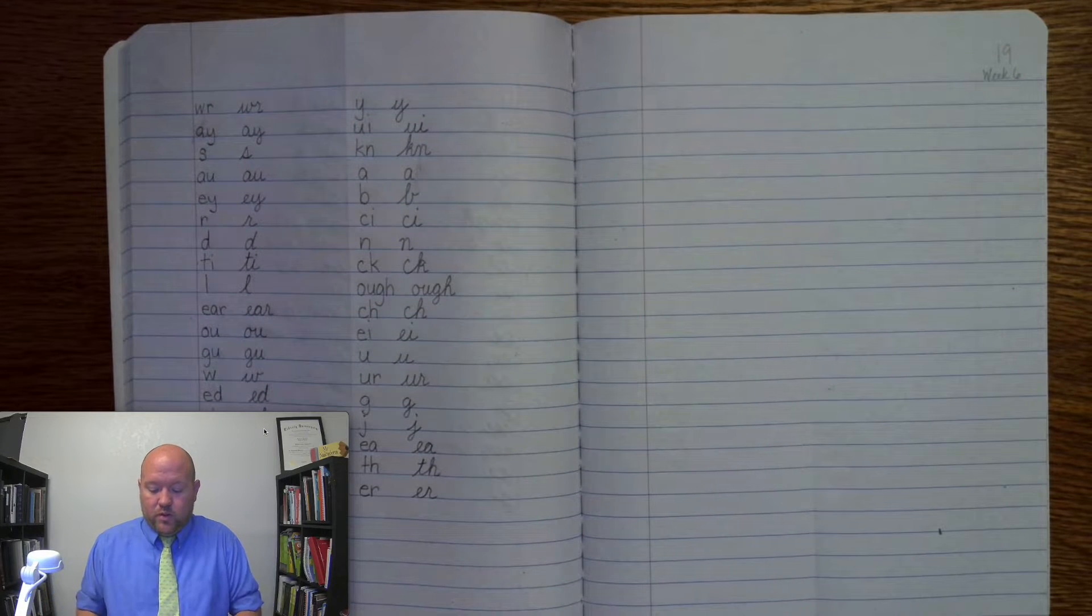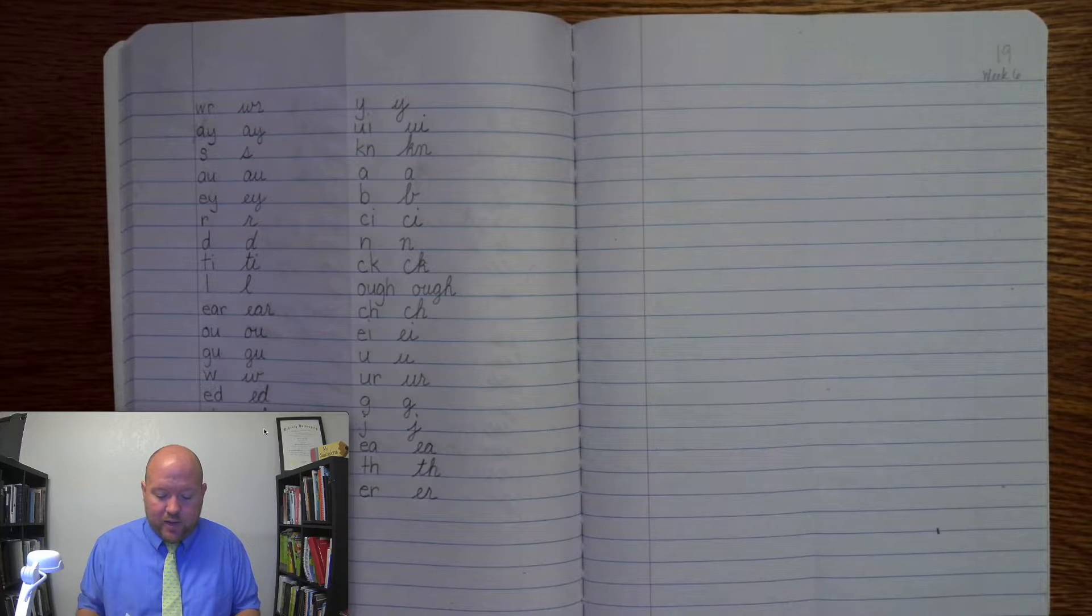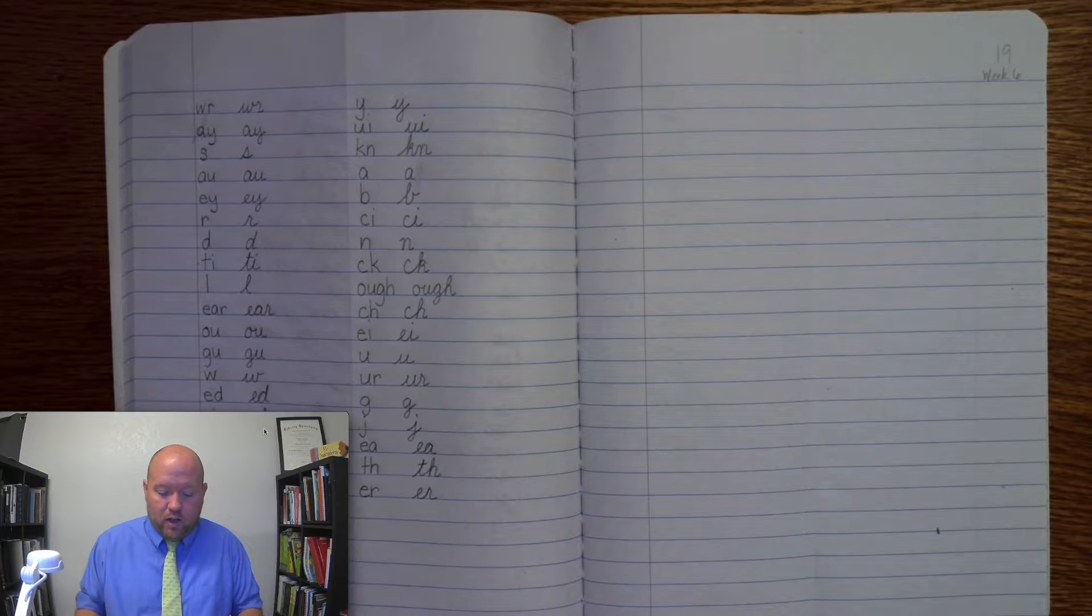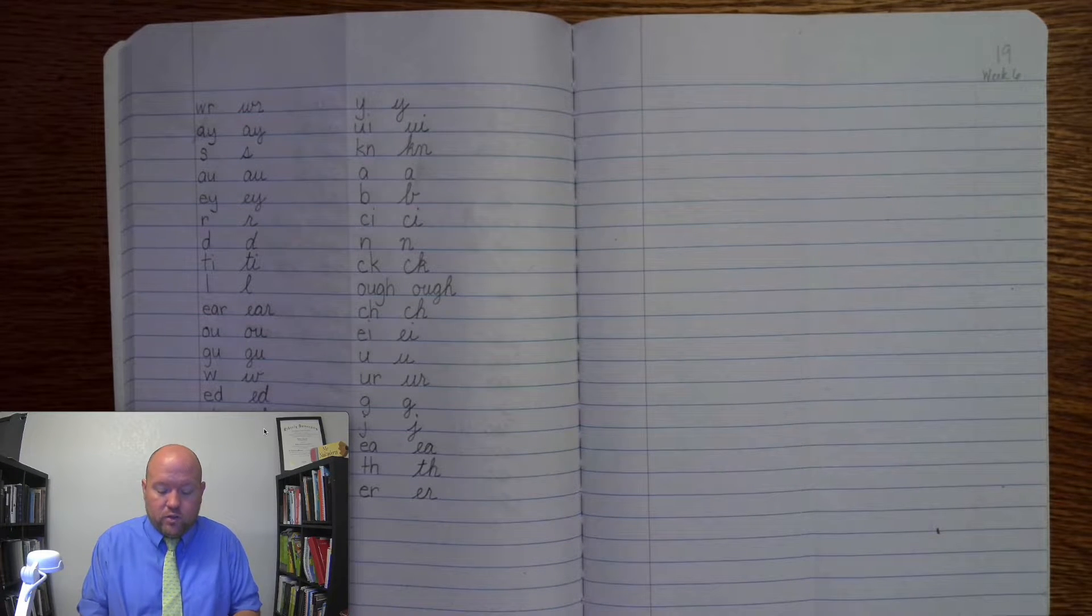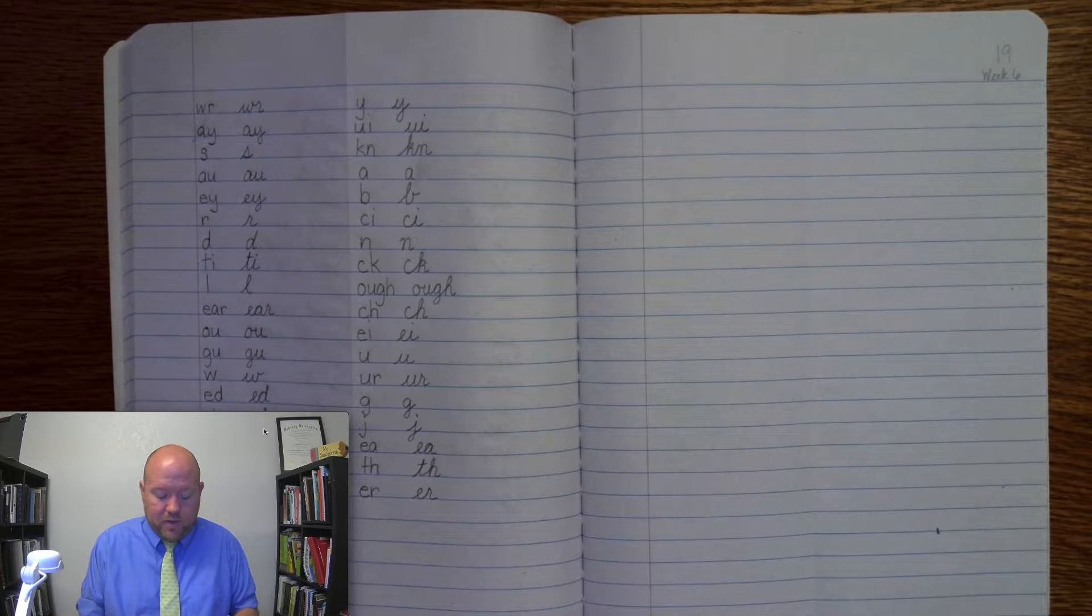All right, next we're going to do our written phonogram review. Make sure that you write it before you look at the screen. On the left side, I'll write it in manuscript for first and second. On the right, I'll write it in cursive for third through fifth. If you get it wrong, that's okay. Just put a line through it. Write the right answer so you know which ones you need to study.